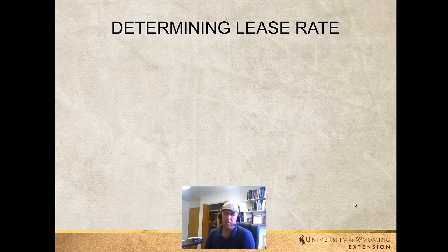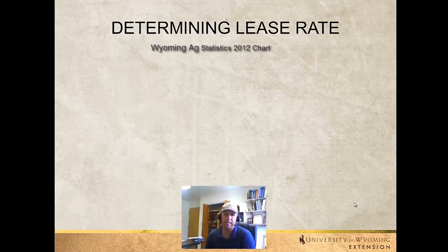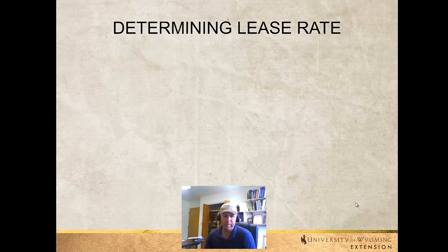When it comes to determining the lease rate, there are a few different ways to do this. My favorite is to look at published data on the price of either a cow-calf month or rent per acre. Generally out west we use cow-calf month because the variability per acre is so high. One resource is the Wyoming Agricultural Statistics Service, which puts out an annual bulletin listing the rate per AUM or per cow-calf pair over a historical period. You can look at that rate and see where you are, while realizing there's quite a bit of local variation — for example, the eastern part of Wyoming tends to have higher summer grass grazing rates than the western part.